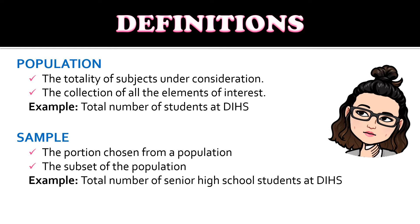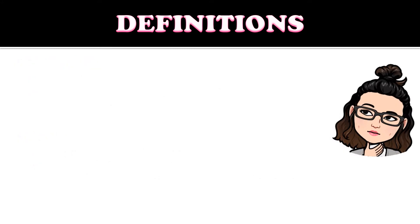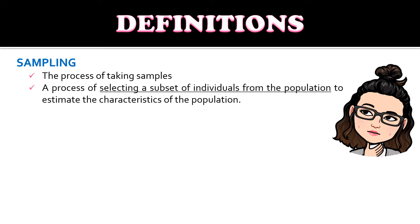An example of a sample is the total number of senior high school students at Dasmarinas Integrated High School. Next, we have sampling — the process of taking samples, specifically a process of selecting a subset of individuals from the population to estimate the characteristics of the population. It can be probability or non-probability sampling.